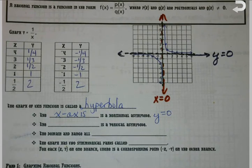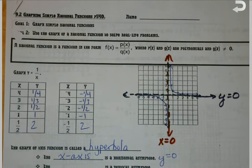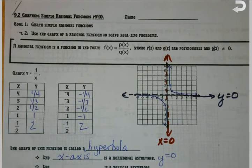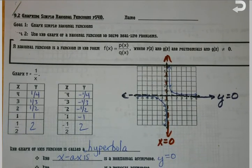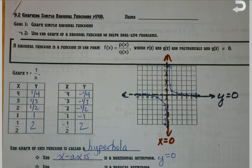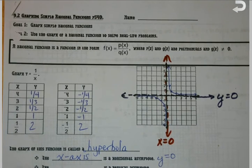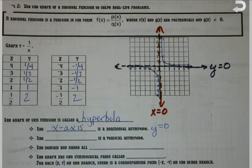Hi, we're going to be taking a look today at 9.2 graphing simple rational functions. We've graphed things before with charts, equations, and expressions, but today we're going to be taking a look at something called a hyperbola.